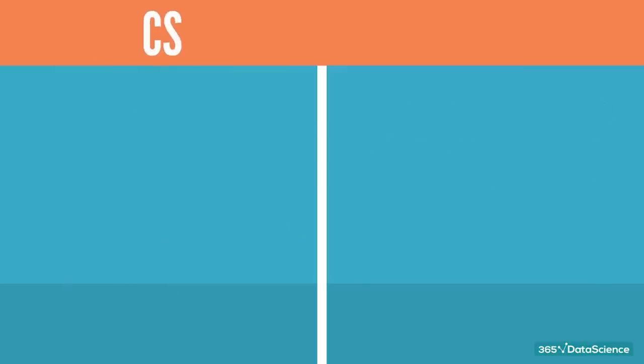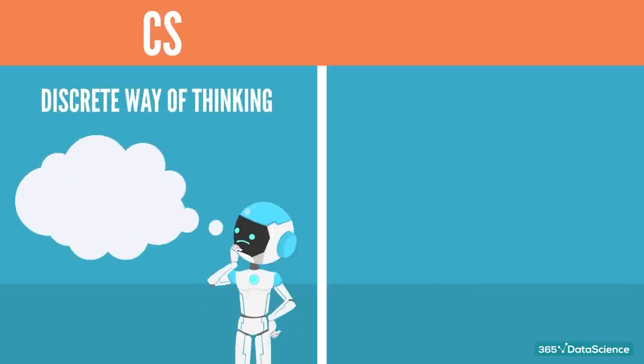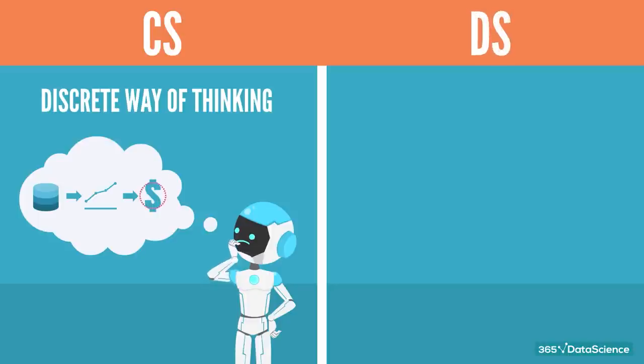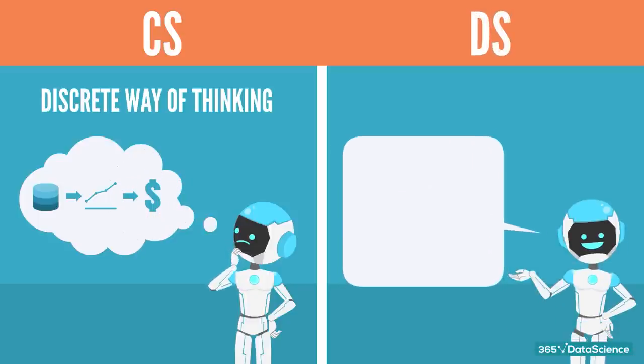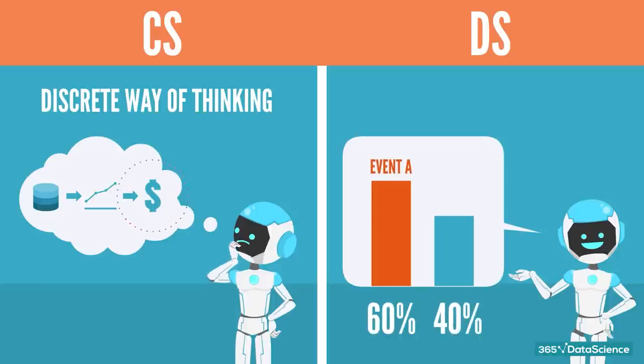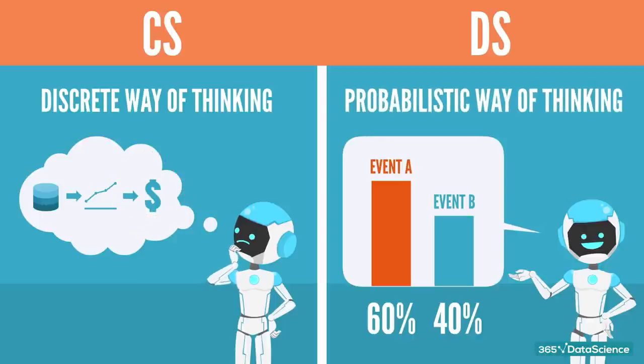Additionally, many CS students develop a discrete way of thinking. To elaborate, algorithms often work on the basis that the result of one action always leads to another. What's important is not what action follows, but that we always know what is next. However, that isn't always the case in data science. Oftentimes, one action means that we have, say, a 60% chance of event A occurring, and a 40% chance of event B occurring. Thus, not developing a probabilistic mindset is a challenge for CS graduates, as they really want everything to be 100% certain all the time.